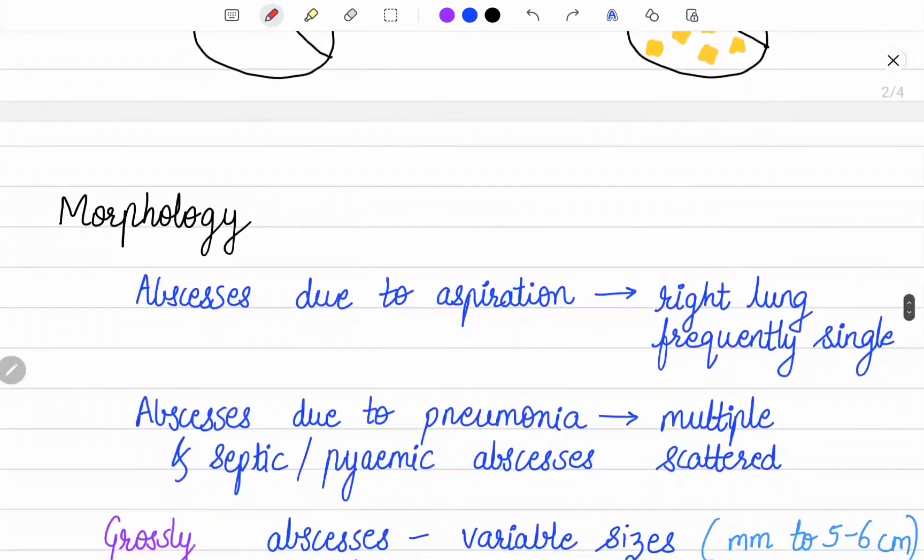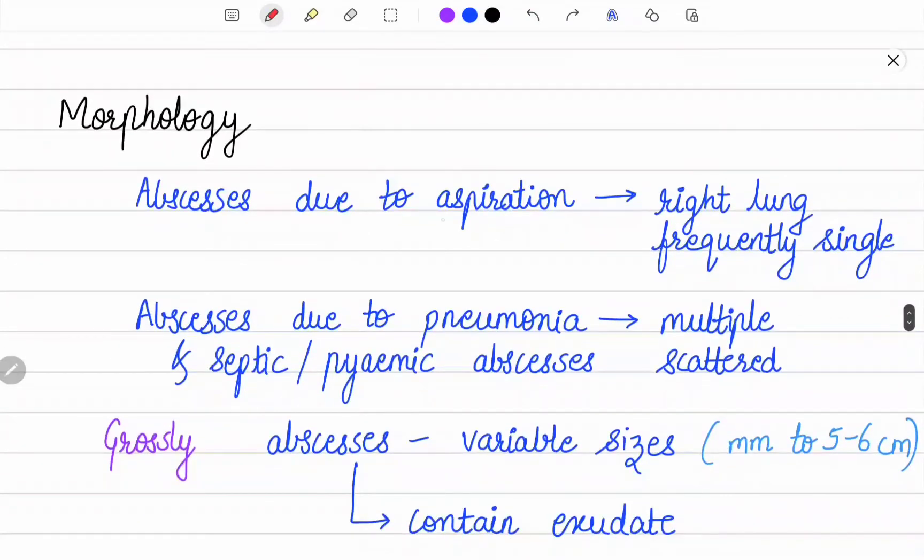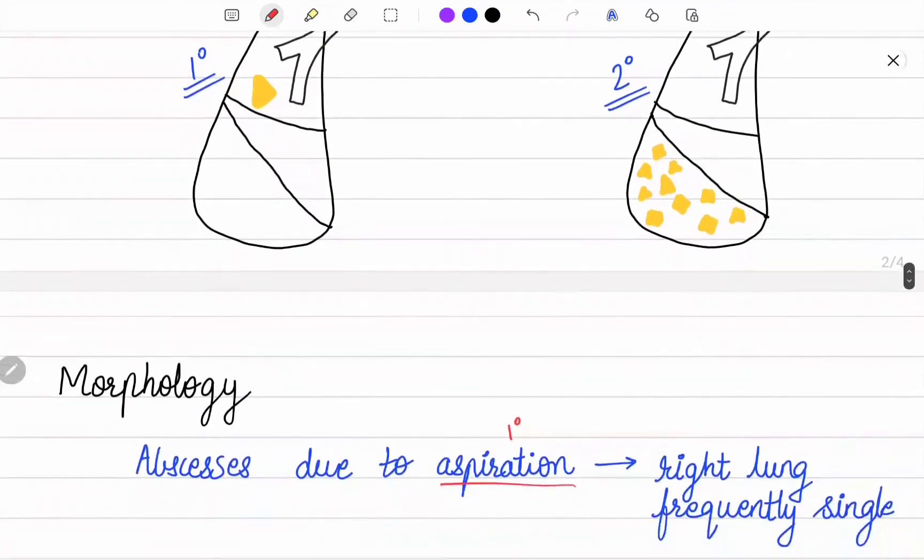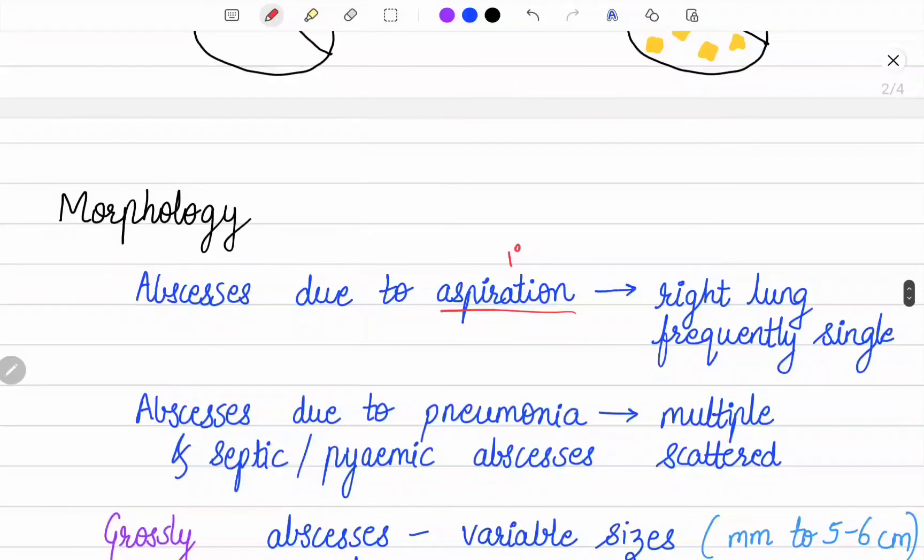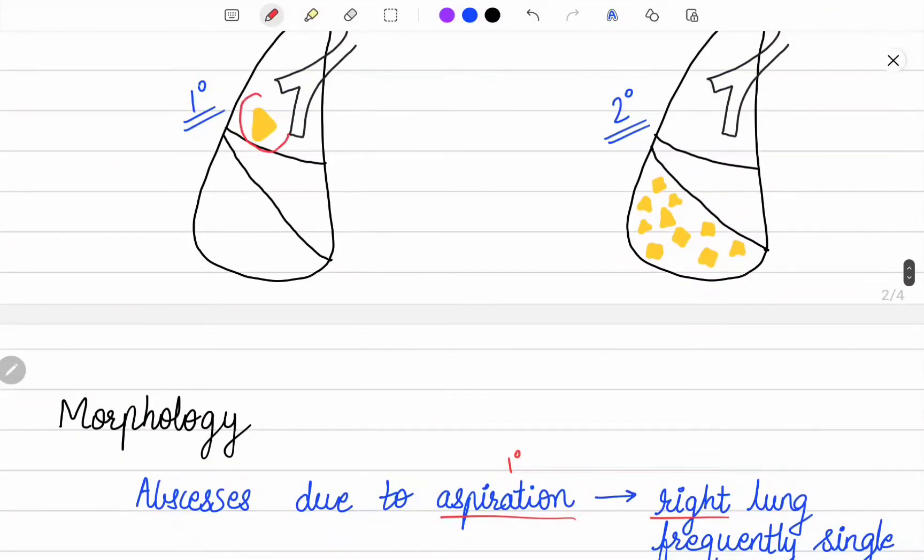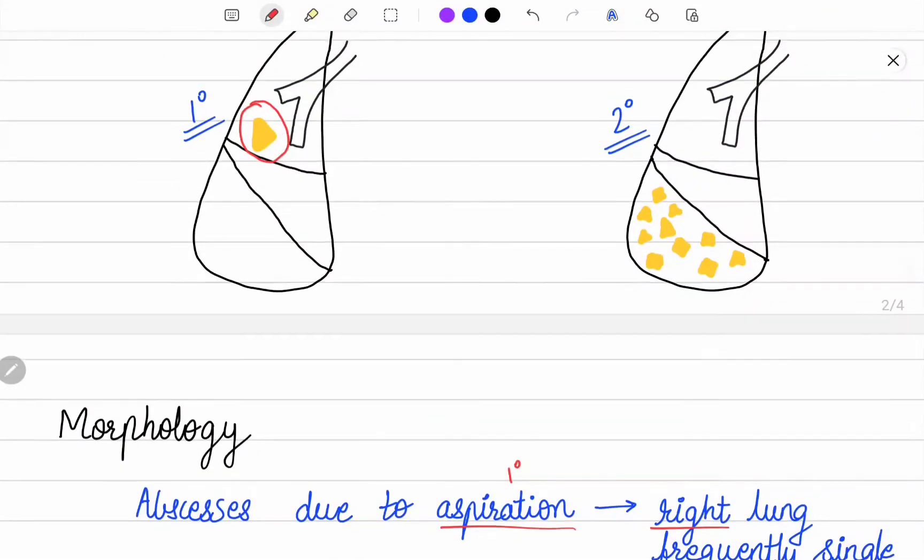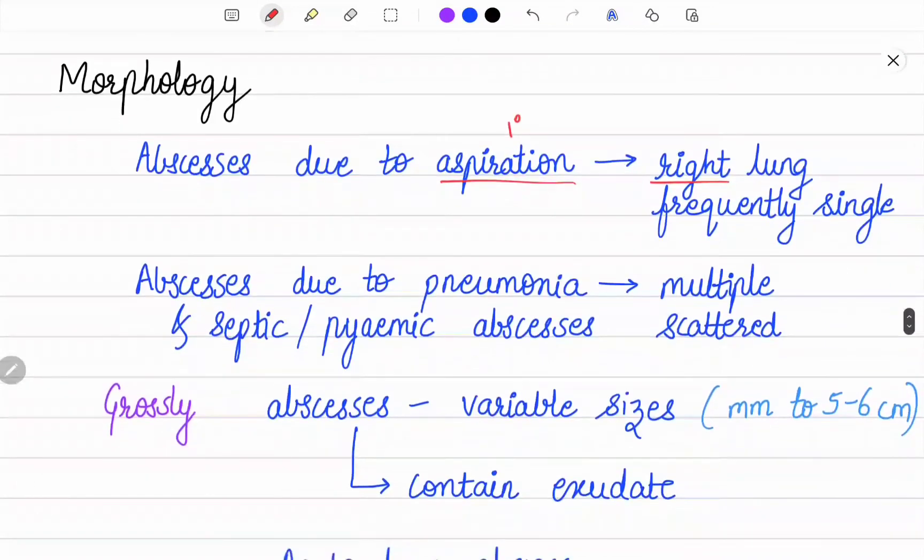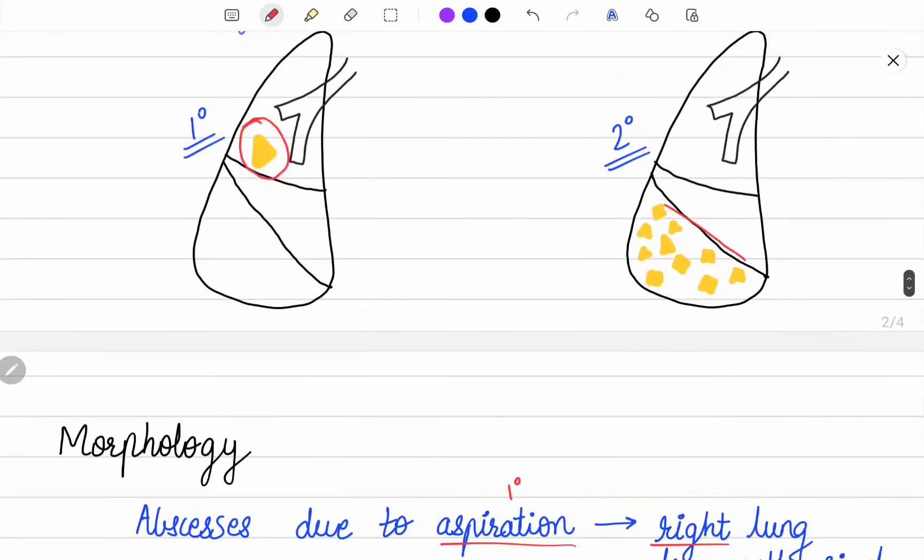Morphology: Abscesses due to aspiration, seen in primary lung abscesses, are most likely to be in the right lung due to the more vertical main bronchus and are frequently single. Abscesses developing from preceding pneumonia or septic/pyemic abscesses are multiple and scattered.